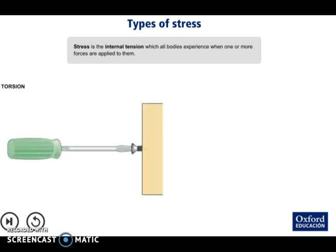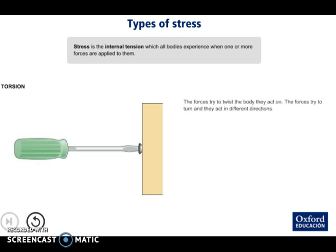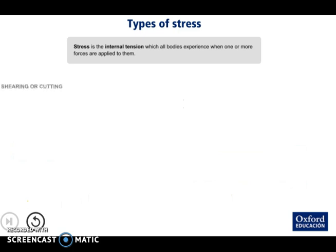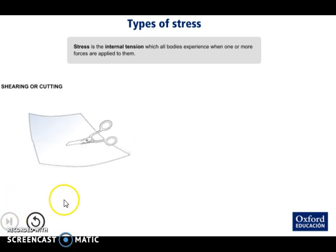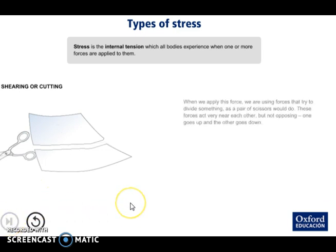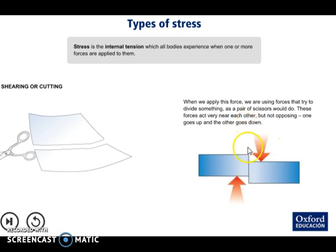Esfuerzo de torsión: ¿cuándo decimos que un elemento está sometido a torsión? Cuando sobre él aplicamos dos fuerzas iguales y opuestas que tienden a retorcerlo; en ese caso tenemos un elemento sometido a torsión y su deformación sería esta. Y el último: esfuerzo de cortadura, quizá el más difícil de entender. Un elemento está sometido a cortadura cuando sobre él se aplican dos fuerzas iguales y opuestas que no están en la misma línea, sino muy cerca una de la otra, con lo cual el elemento tiende a cortarse.